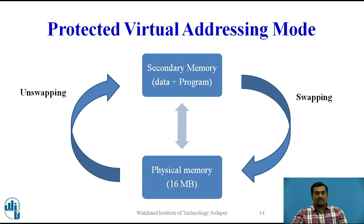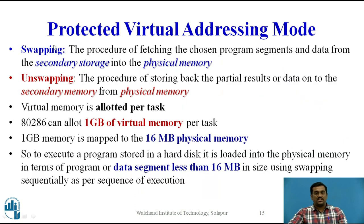These segments are called pages and are ordered sequentially as per the program. Pages are loaded into physical memory through swapping. When a program segment is loaded into physical memory it is accessed and executed by the CPU, and results may be stored back into secondary memory using unswapping. The next page is then loaded into physical memory via swapping. Swapping is the procedure of paging chosen program segments and data from secondary storage into physical memory, while unswapping stores partial results or data back onto secondary memory from physical memory.